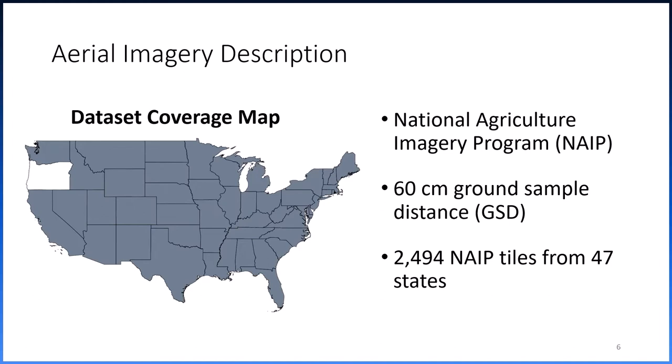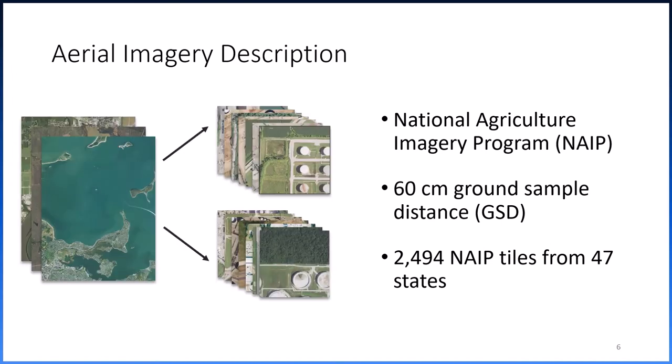To ensure that tanks of interest are clearly identifiable, we have only included tiles with a ground sampling distance of 60 centimeters. To make it easier to annotate, we have broken each tile into smaller images. The size and spatial variability across the U.S. improves the robustness of our model and the value of the dataset to future end users.